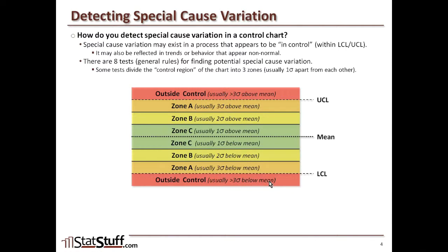Anything outside of control — greater than three standard deviations either above or below the mean — falls outside these zones. It's important to understand what these different zones mean and how they're broken out based on the number of standard deviations each is from the mean.